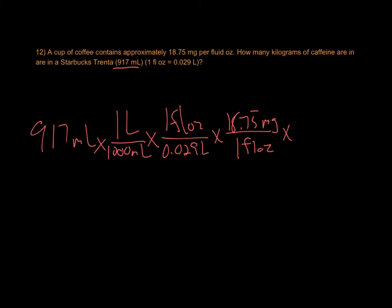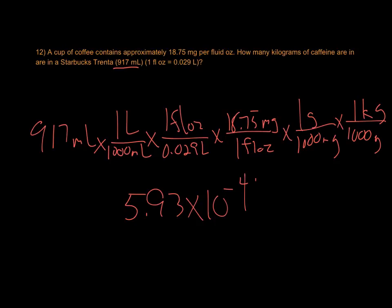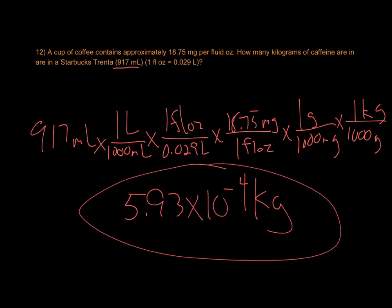Then we're converting milligrams to kilograms. Convert milligrams to grams. 1,000 milligrams in 1 gram. Then convert grams to kilograms. There's 1,000 grams in 1 kilogram. We do all that math out, and we find that there are 5.93 times 10 to the negative 4th kilograms of caffeine in one large Starbucks coffee. That's 0.000593 kilograms, which is half of a gram of caffeine. That's an awful lot of caffeine. 500 milligrams.